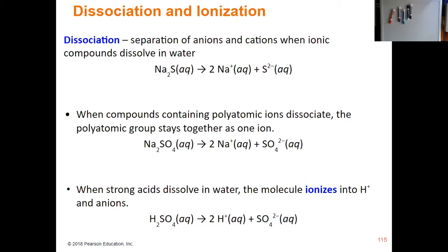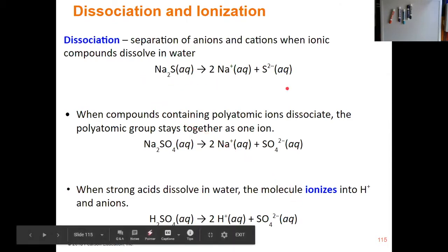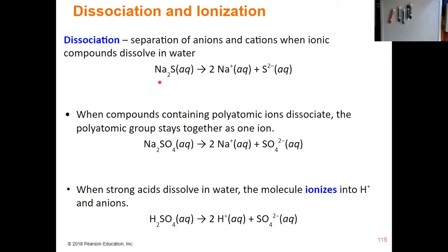When I say dissociation, I'm talking about the actual separation of your anions and your cations when your ionic compounds dissolve. So if you have something like sodium sulfide, when one formula unit of sodium sulfide dissolves, you have two sodium ions and one sulfide ion. When you have a polyatomic ion compound dissolving, that dissociates into the cation and the anion — in this case, the cation is sodium ions, but the anion is the sulfate ion itself. The sulfate ion stays together; it doesn't separate into its component atoms.